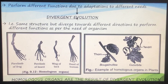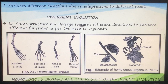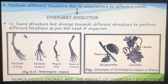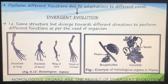Divergent evolution means that the structures are the same structurally, but organisms diverge to perform different functions in different directions - there is a divergence towards different directions to perform different functions depending upon the need of the organism. So these are the four limbs of frog, four limbs of lizard, four limbs of birds, and the hands of humans - actually the total four limbs - which have humerus, then radius, ulna, carpals, metacarpals, and phalanges.